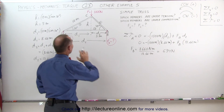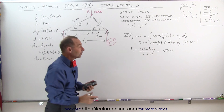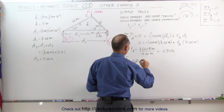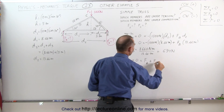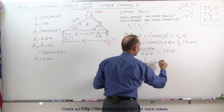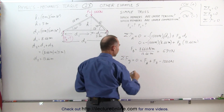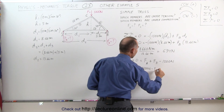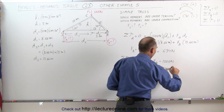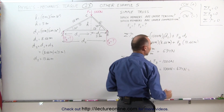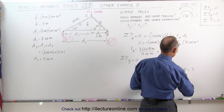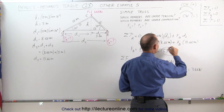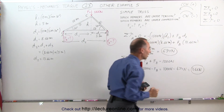Now to find the force at A, we can either move the pivot point to B and redo the problem, or we can use the fact that the sum of all forces in the y-direction must add up to zero. That means F_A plus F_B minus 1000 newtons equals zero, so F_A equals 1000 newtons minus F_B, which is 1000 minus 634, giving us 366 newtons. The force at B is 634 newtons and the force at A is 366 newtons — and 366 plus 634 adds up to 1000, which checks out.